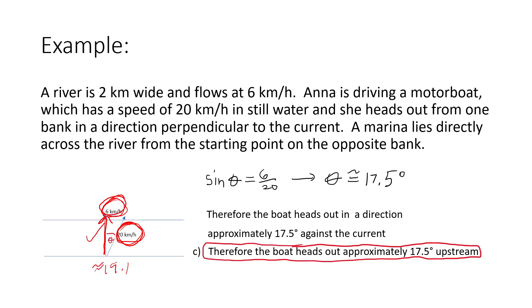So the resultant velocity of the boat would be approximately 19.1 kilometers per hour straight across the river.